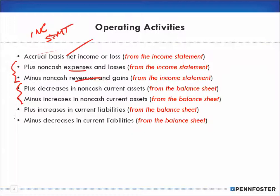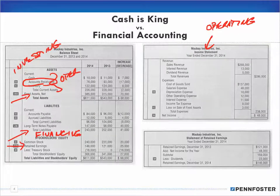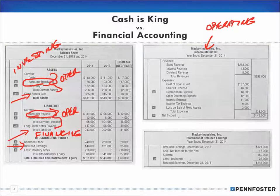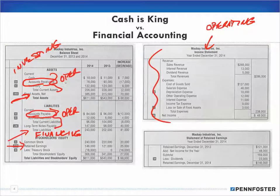We also take a look at the effect on our current liabilities — in the balance sheet, current liabilities are considered operating as well, mostly having to do with accounts payable. Notice that when I first did this I said operating was the income statement, investing was the long-term assets, and financing was the long-term liabilities and stockholders' equity — I didn't mention current assets or current liabilities, and now you can see why.